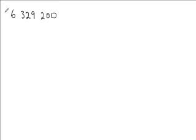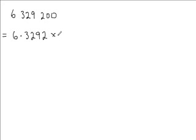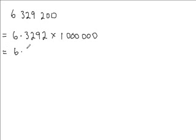The number between 1 and 10 comes from the figures in our question. So for this particular number, our number between 1 and 10 is 6.3292. Now expressing a number in standard form doesn't alter the value in any way — we're just writing it in a different way. So in order to keep the same value, we need to multiply 6.3292 by 1 million, which is 10 to the power of 6. So we have 6.3292 times 10 to the power of 6, and this is the number 6,329,200 in standard form.